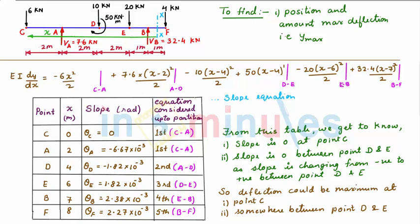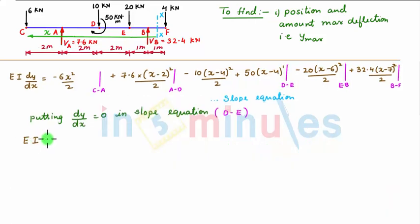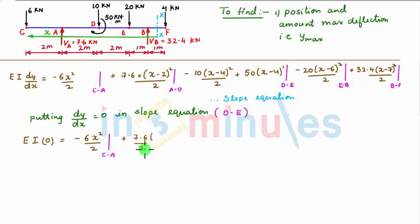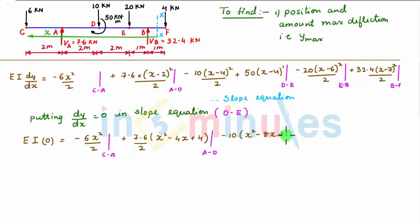So we get EI into dy/dx = 0, equal to minus 6 into x² by 2 (first partition), plus 7.6 by 2 into (x² minus 4x plus 4) (second partition), minus 10 into (x² minus 8x plus 16) by 2, plus 50 into (x minus 4) (third partition).